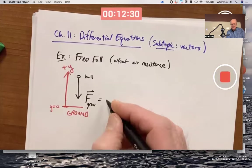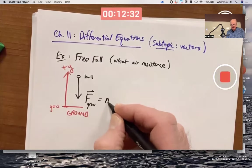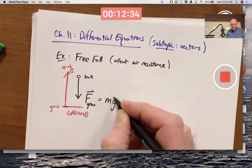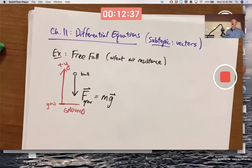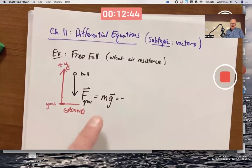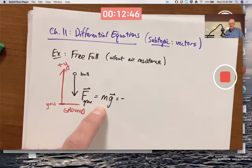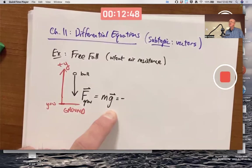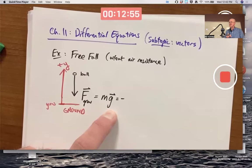You could do some other location as y equals zero. It's really arbitrary. You also could take the positive y direction to be downward. Either way. You just got to pick a coordinate system and you got to stay consistent with it. Once I've set up my coordinate system, I can write down an equation for the force due to gravity.